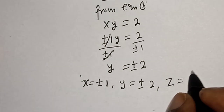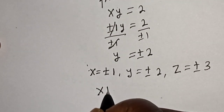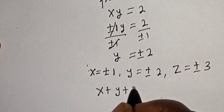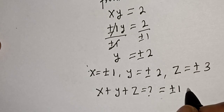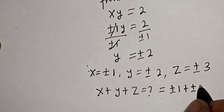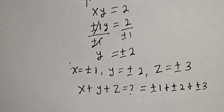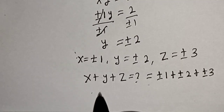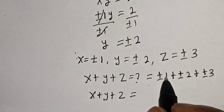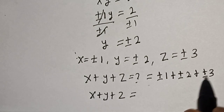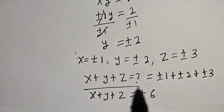And z is equal to plus or minus 3. Therefore, x plus y plus z is equal to plus or minus 1 plus plus or minus 2 plus plus or minus 3, which equals 1 plus 2 plus 3, giving us plus or minus 6. This is the final answer.